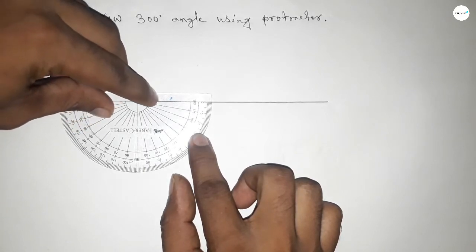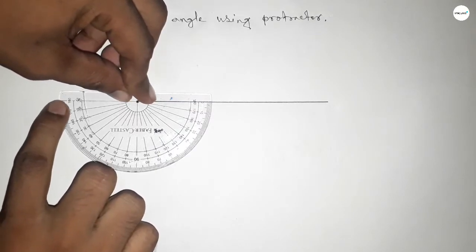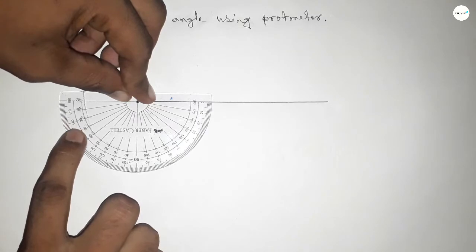perfectly, then counting the angle. So this is 180 degrees. Now counting 120 degrees. So this is 10, 20, 30,